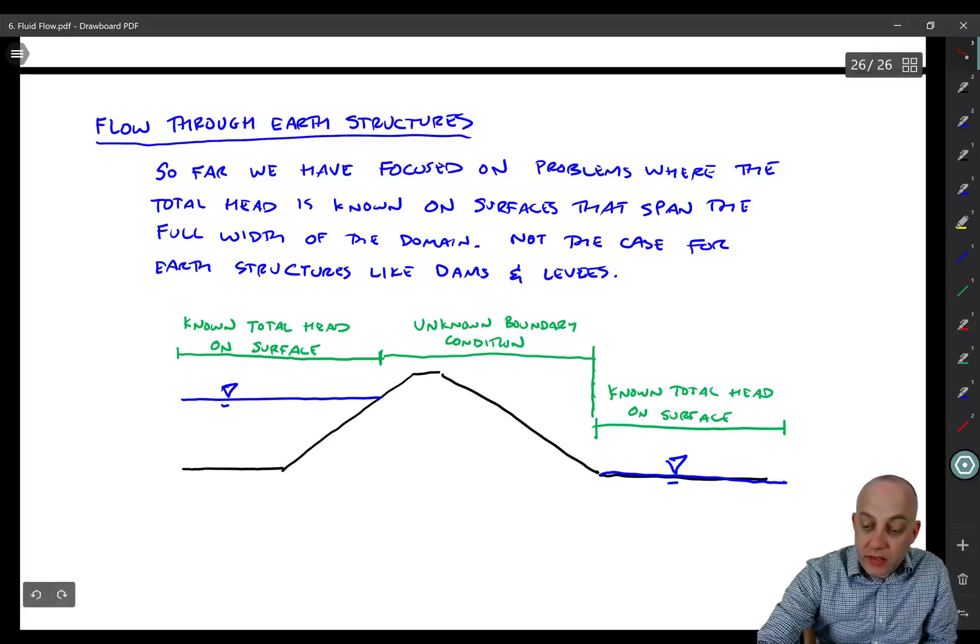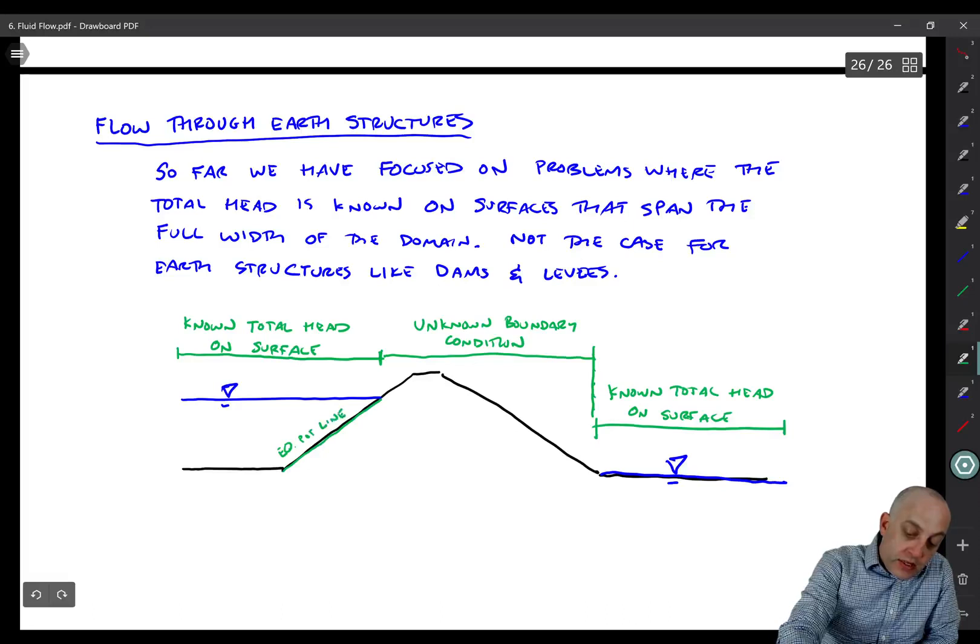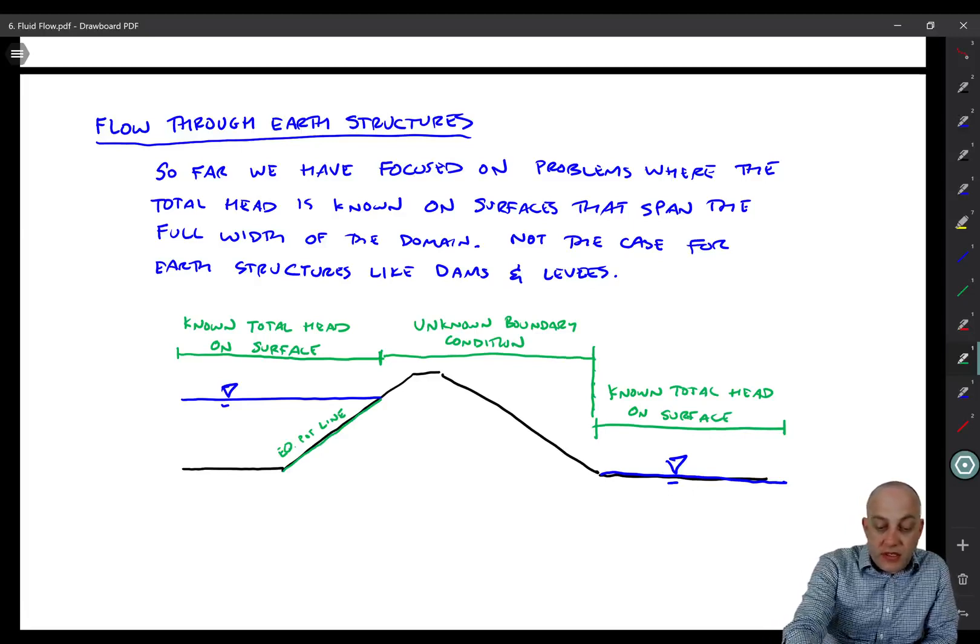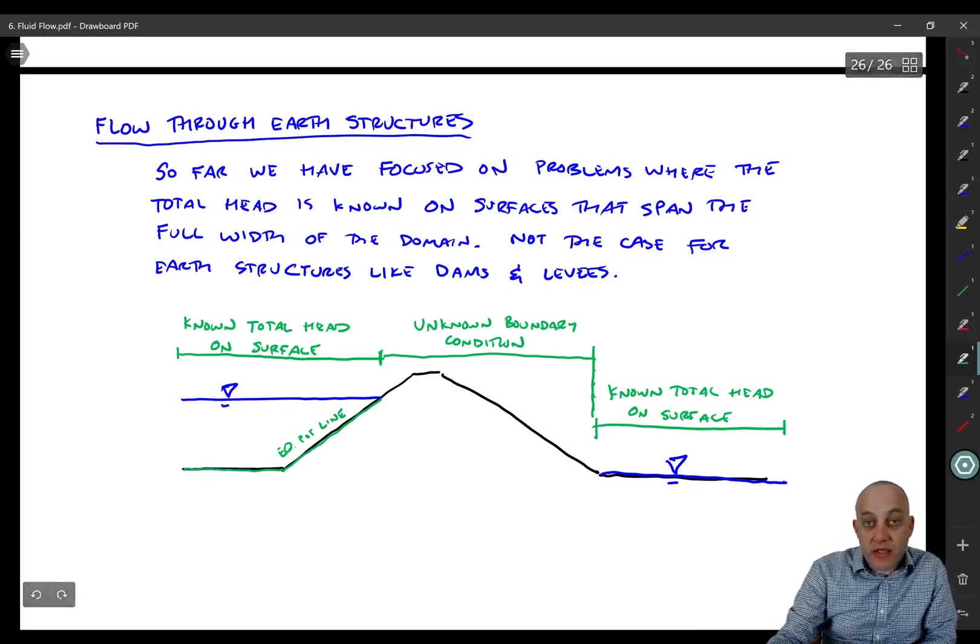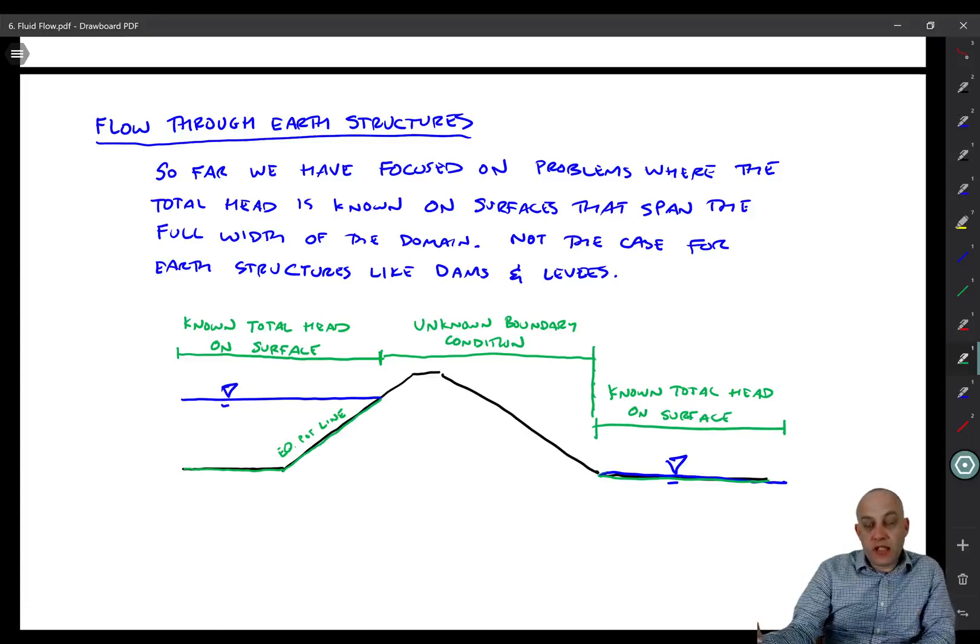So basically this one right here, this is an equipotential line. I'm going to draw it in green. So this is an equipotential line or an EQ-pop line. And then of course this is also an equipotential line and that line happens to have the same total head. Then we have another equipotential line over here because we know the elevation head and pressure head along that surface.